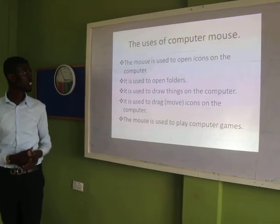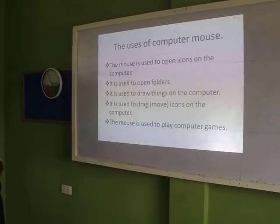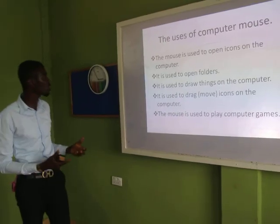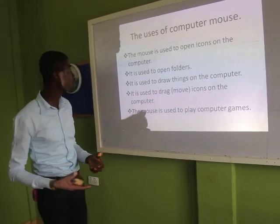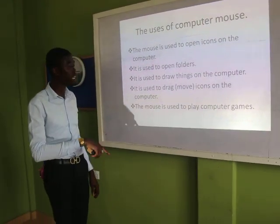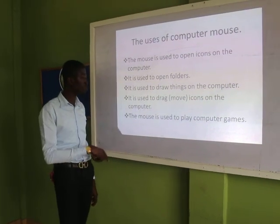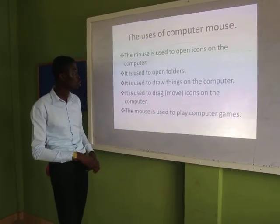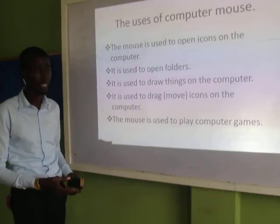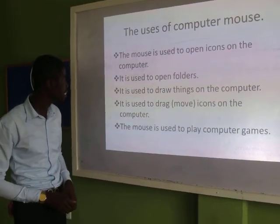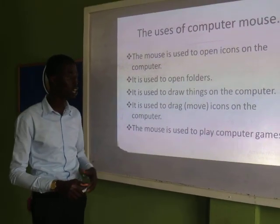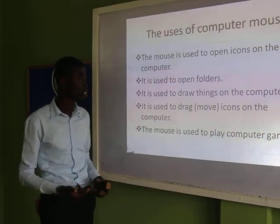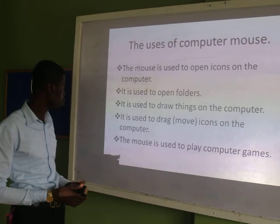Now let's consider some uses of a computer mouse. One, the computer mouse is used to open icons on the computer. If you want to open an icon on the computer, you use the mouse to point at it and click, and it will open it for you. It is also used to open folders. It is also used to draw things on the computer. If you want to draw — for those of us who love drawing — we use the computer mouse to draw.